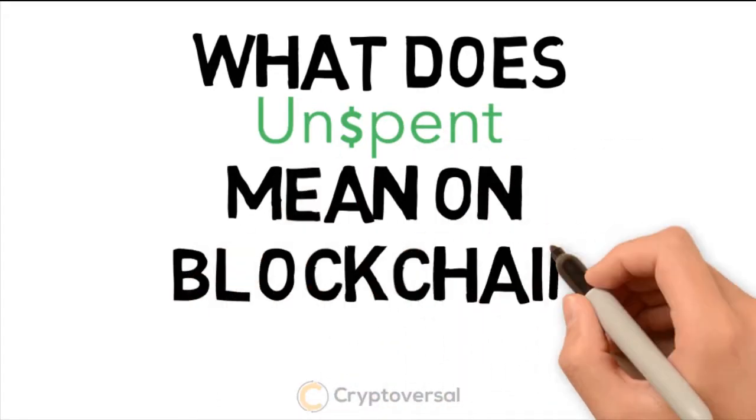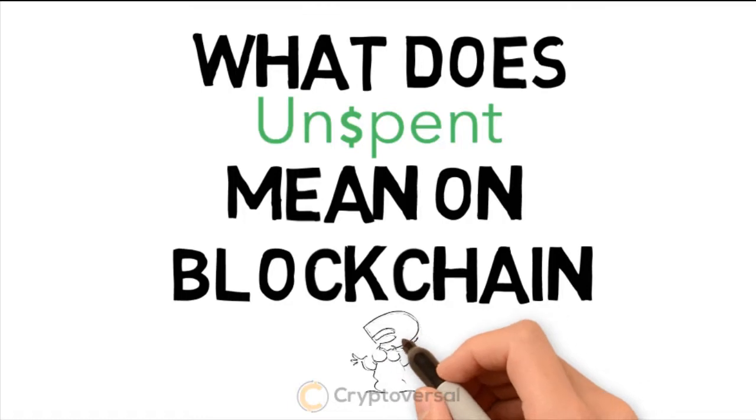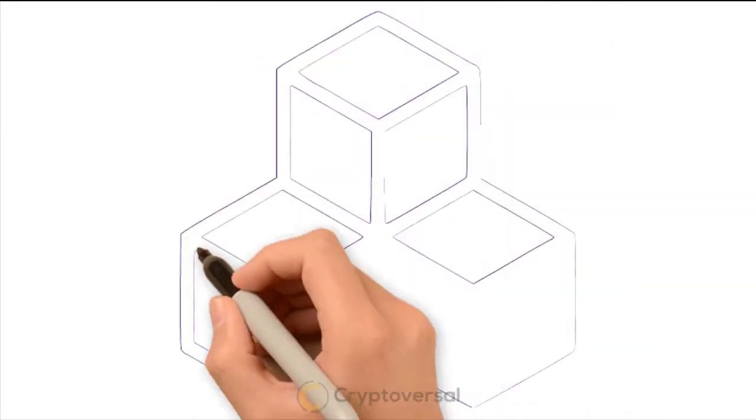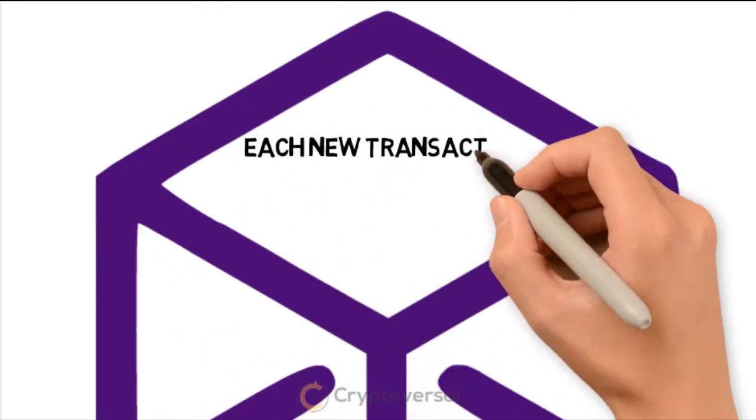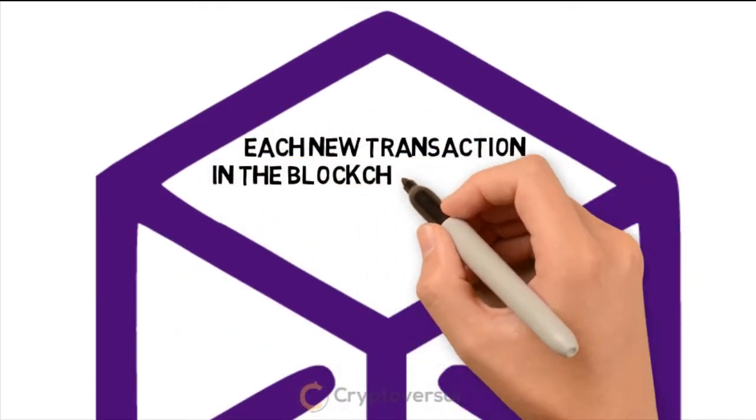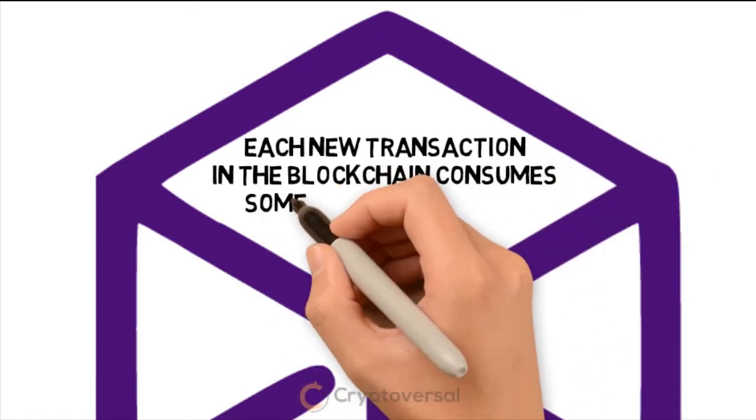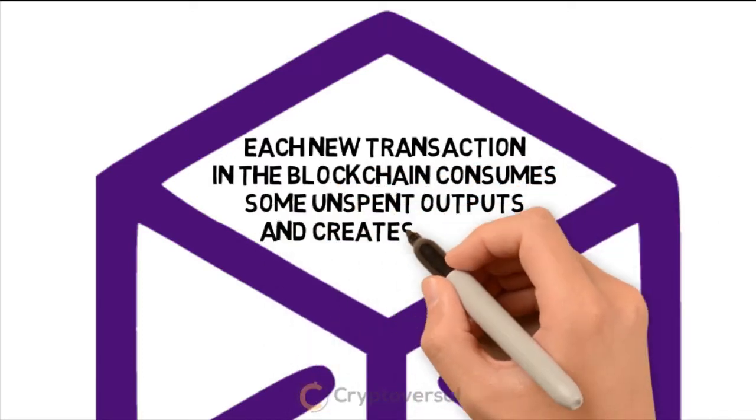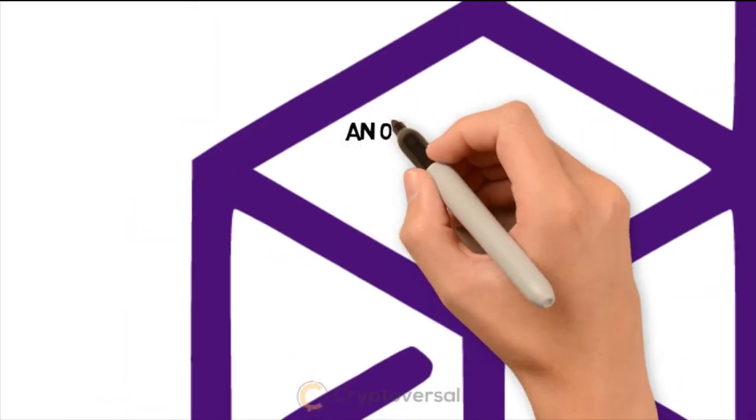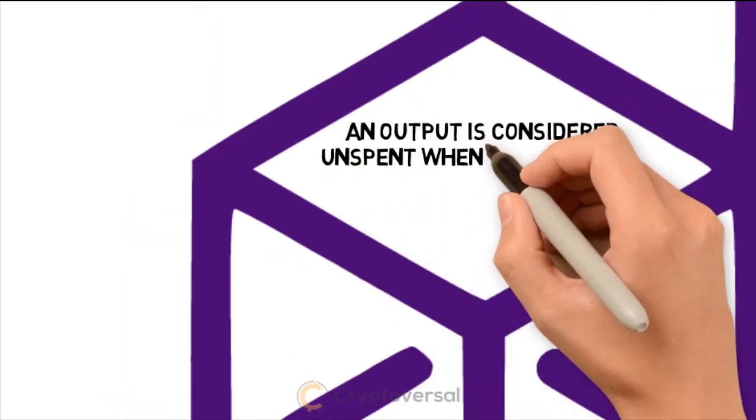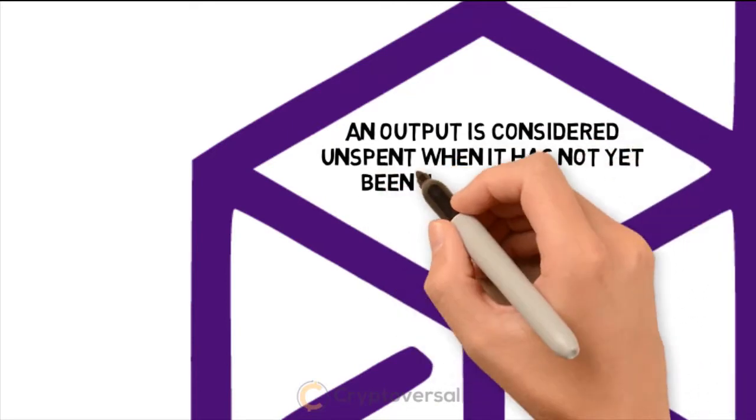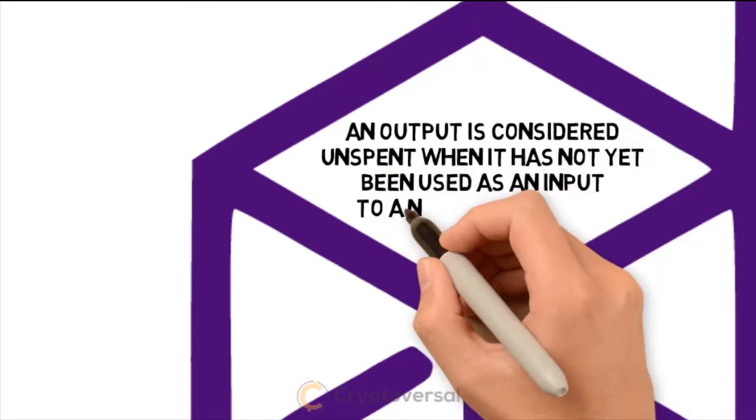What does unspent mean on blockchain? Each new transaction in the blockchain consumes some unspent outputs and creates others. An output is considered unspent when it has not yet been used as an input to a new transaction.